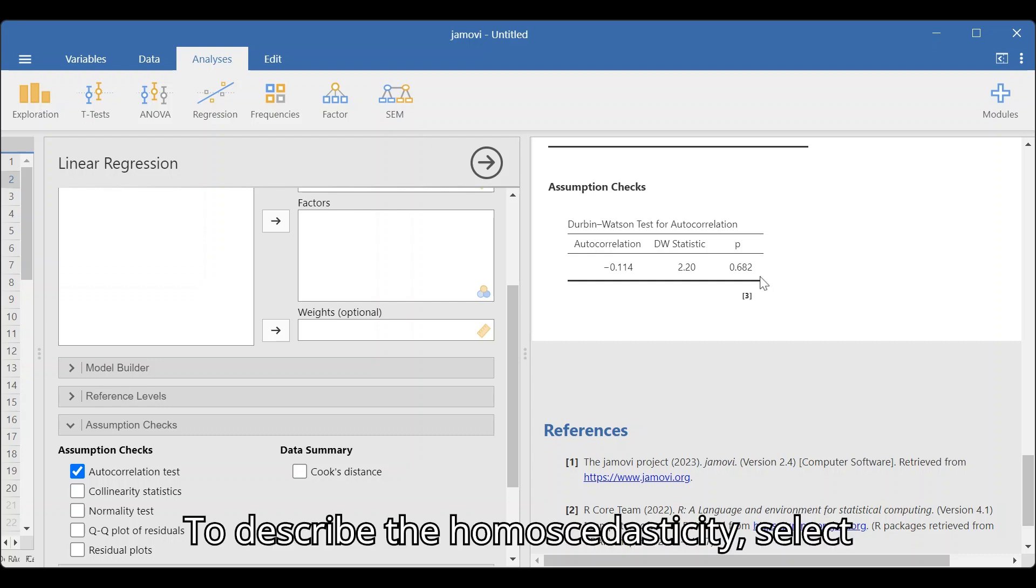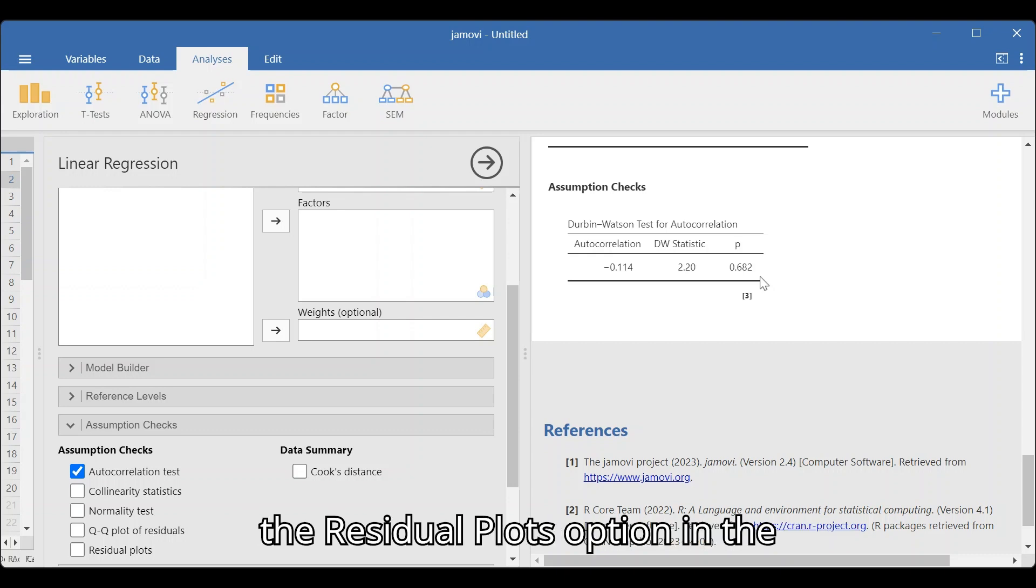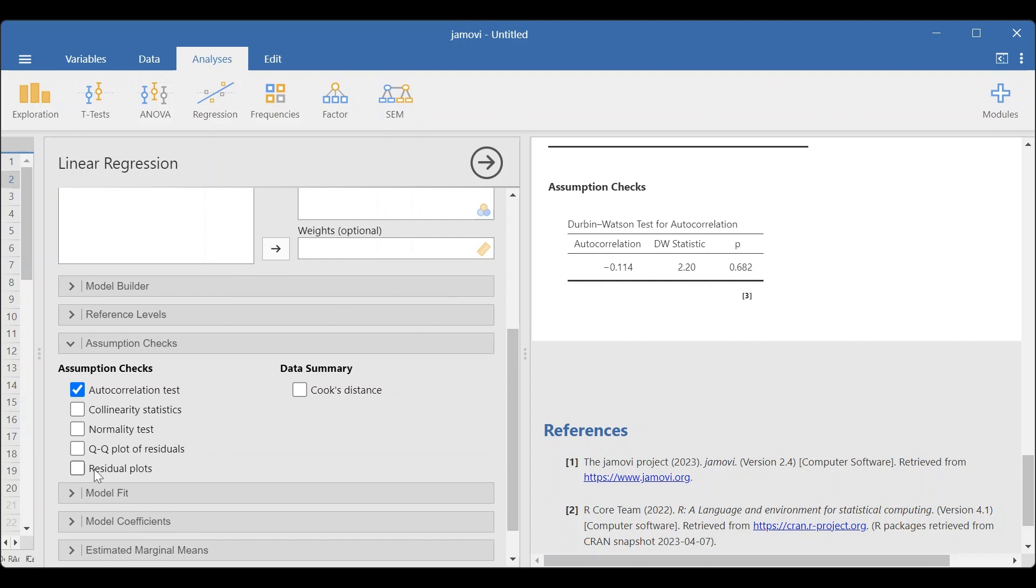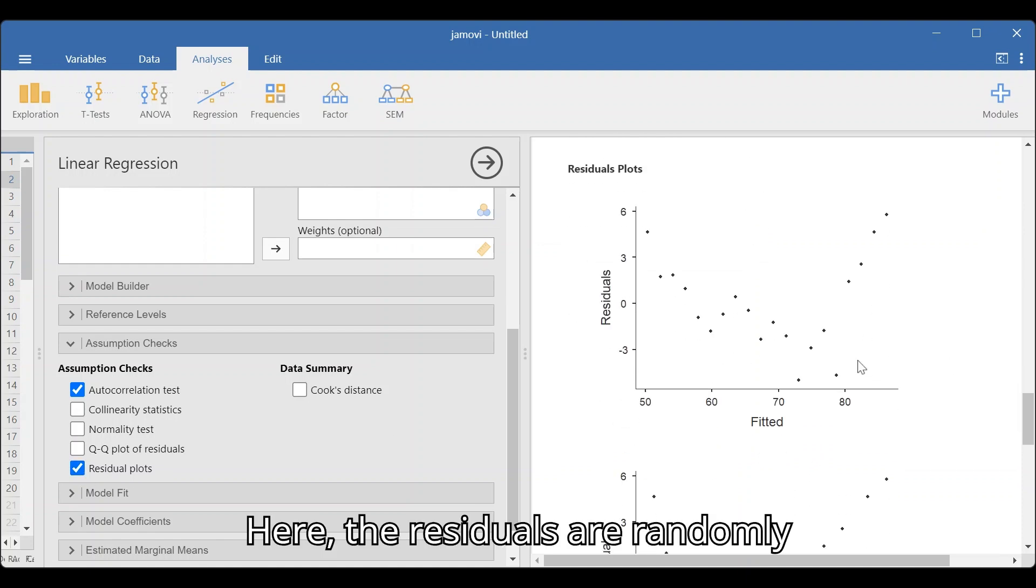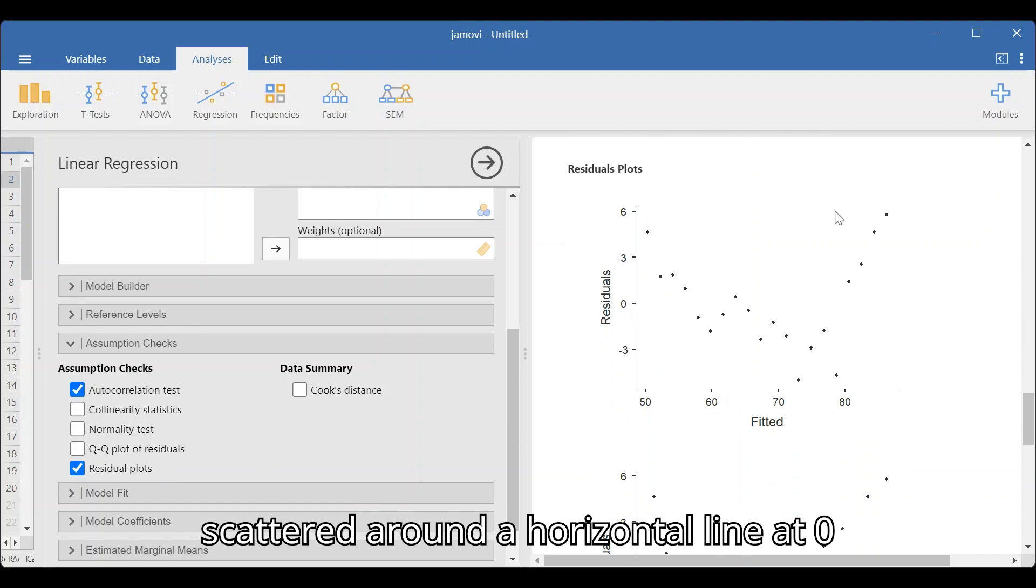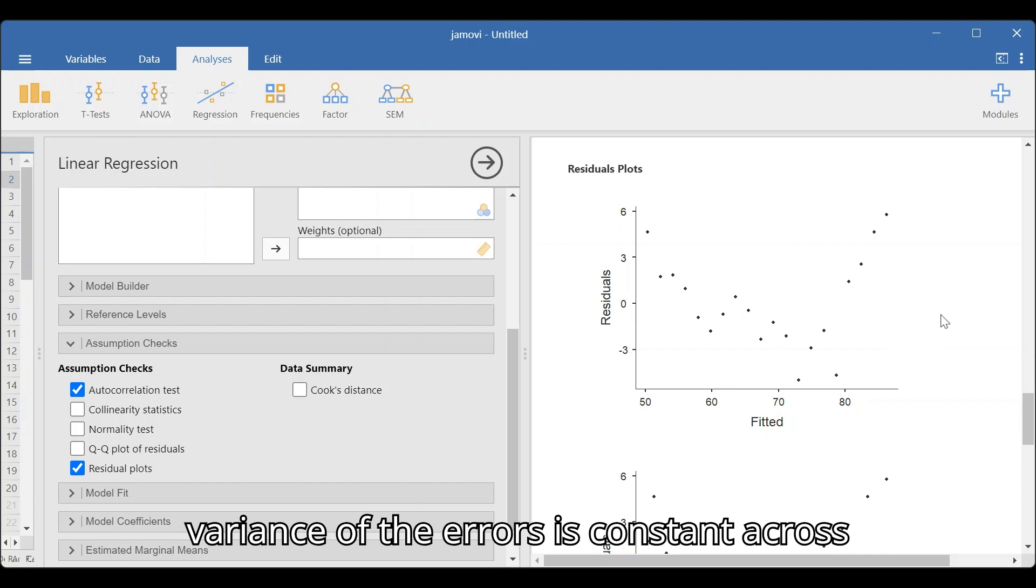To describe the homoscedasticity, select the Residual Plots option in the Assumption Checks drop-down panel. Here, the residuals are randomly scattered around a horizontal line at 0 on the plot. This indicates that the variance of the errors is constant across all predicted values.